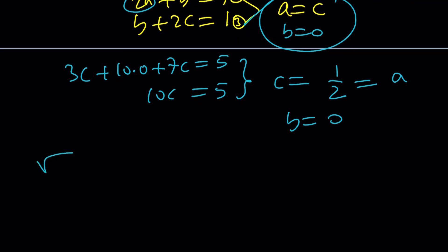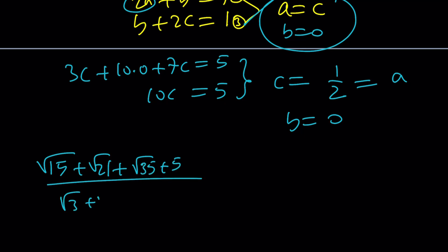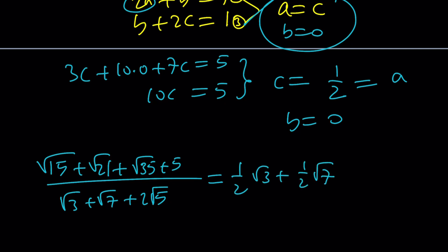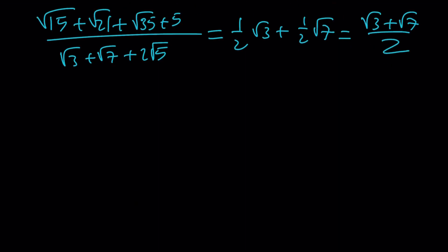As a result — and this is only the first method — the answer was in the form a root 3 plus b root 5 plus c root 7, so the answer is one half root 3 plus one half root 7, and the other terms are zero. This is the same as root 3 plus root 7 all over 2. It was that simple, and that's the end of the first method.